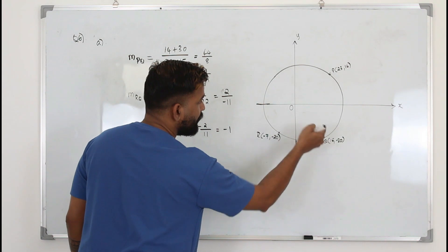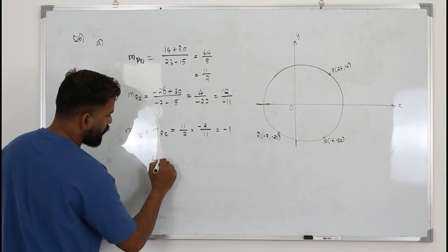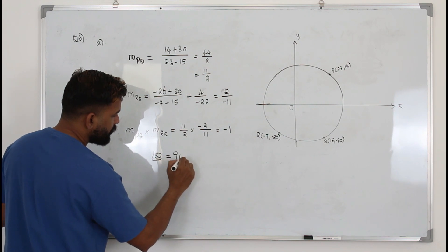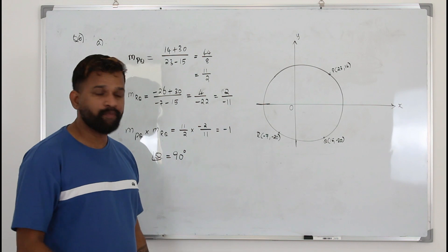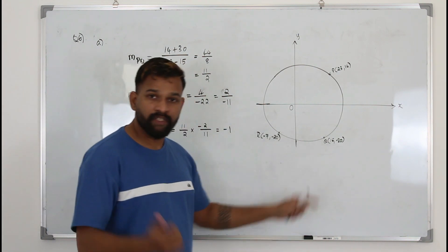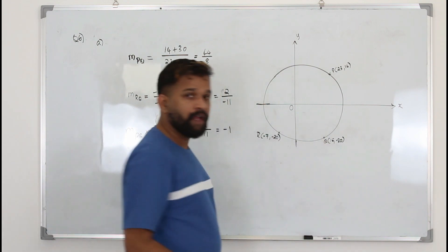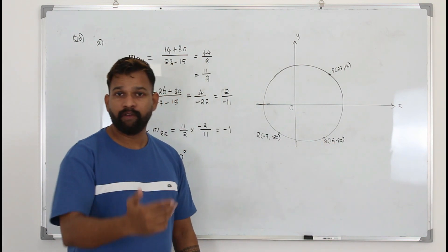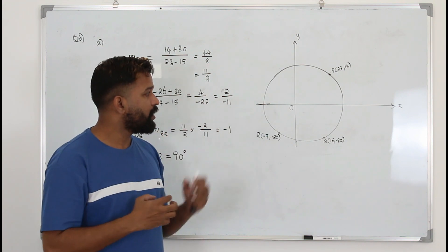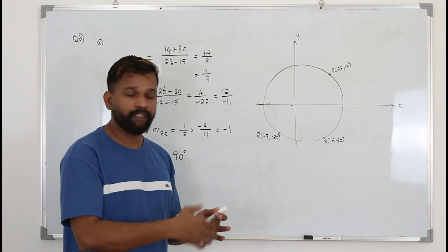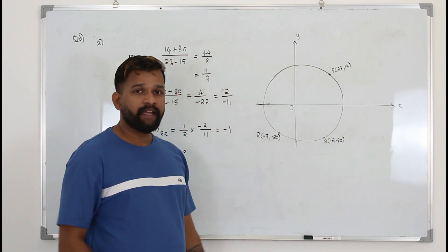Since the product of the slopes equals −1, the lines are perpendicular — they intersect at 90 degrees — so the angle at Q is 90 degrees. That's how you prove it. Alternatively, you can use the distance formula to find RP, PQ, and RQ, then apply Pythagoras' theorem to show the three values satisfy it, confirming a right angle triangle.